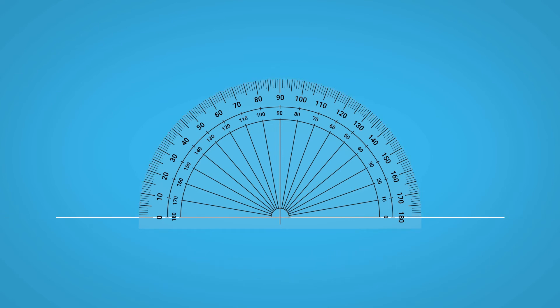Semicircular protractors share the same basic features: outer and inner scales both running from 0 to 180, a baseline, and a perpendicular line indicating the 90 degree mark. The point where these two straight lines meet is known as the centre of the protractor.